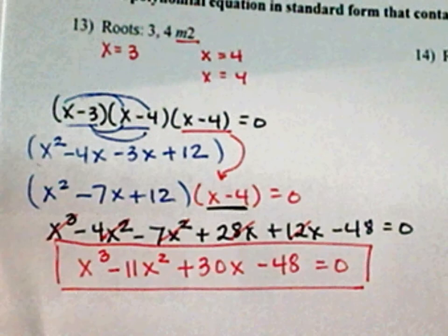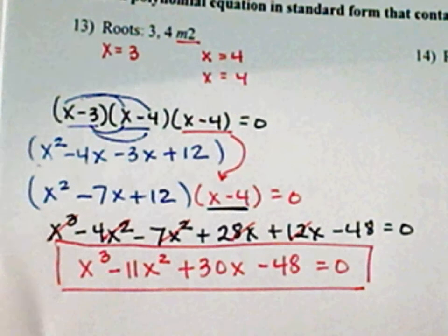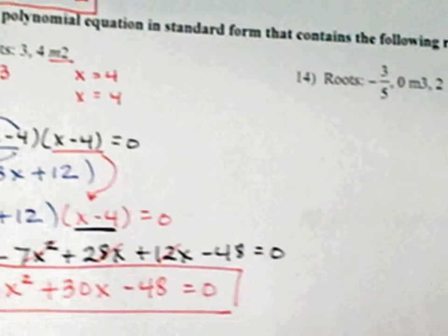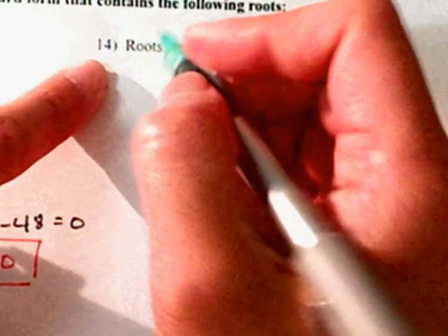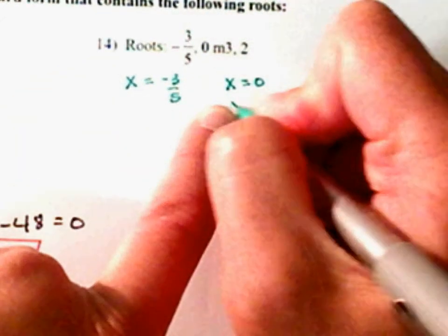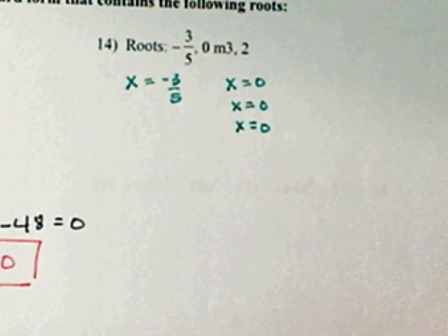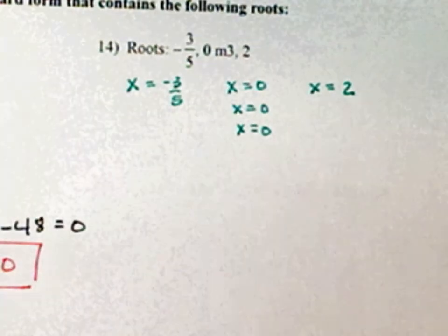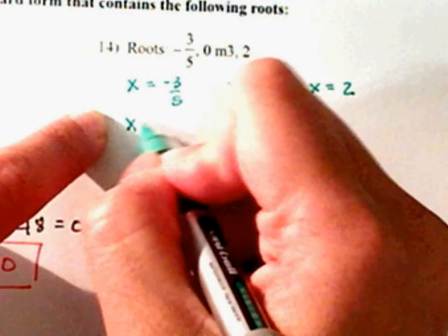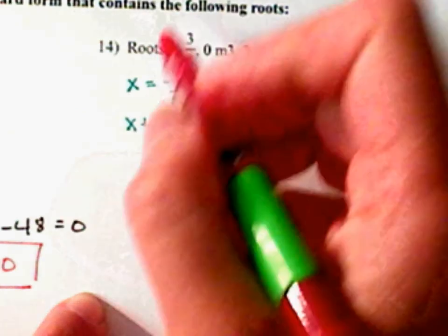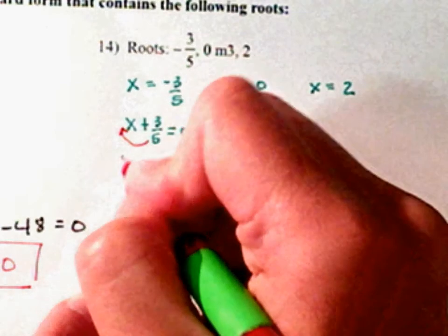One step at a time — please be very careful with your numbers, careful with your adding and subtracting, multiplying and dividing. Those signs make a big deal. Alright, let's look at number 14. Do not be scared of fractions. This one right here is the same thing as x equals negative 3 over 5. Then you have x equal to 0 three times. And this third one, x equals 2.